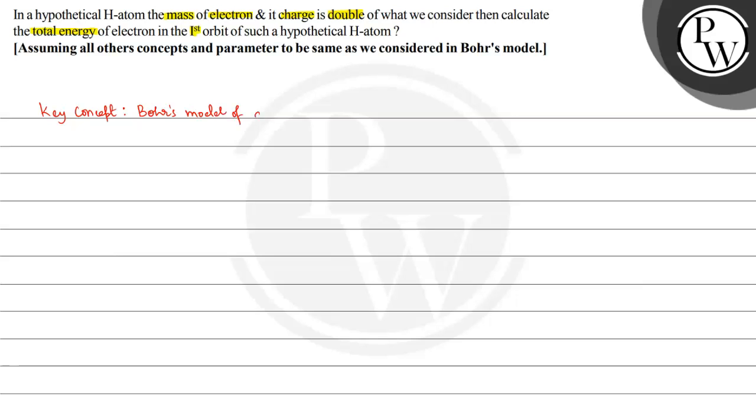of atom. In Bohr's model of atom, we derived that the energy is equal to minus 2π² m e⁴ Z² divided by n² h². Here, given a